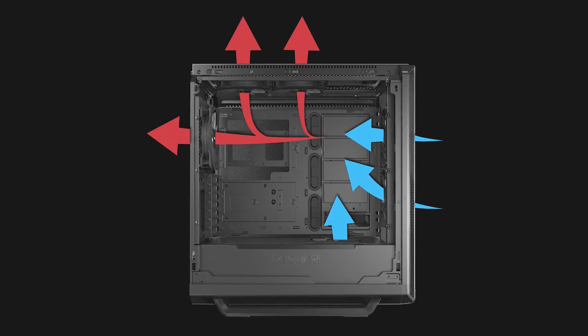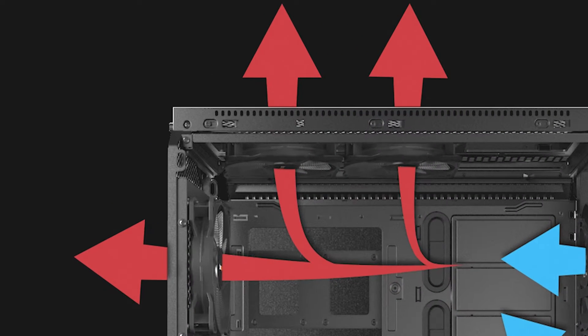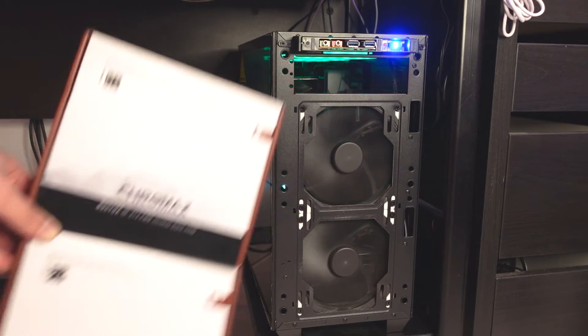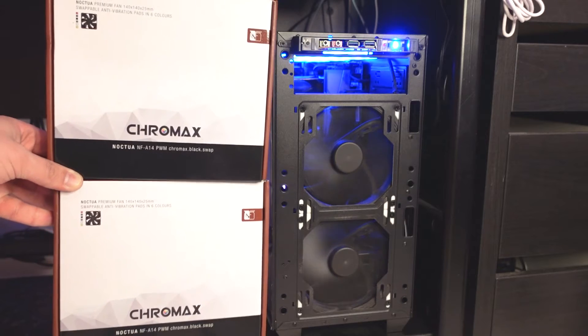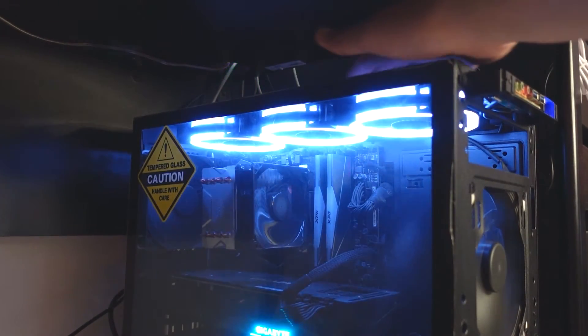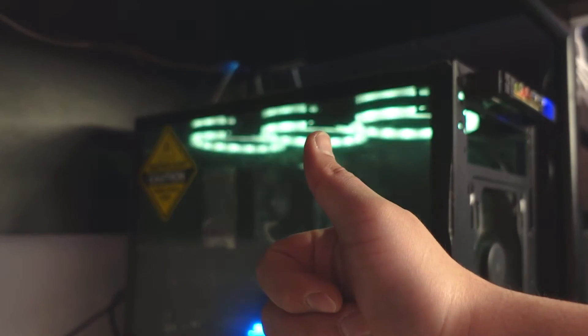Another thing to consider is cooling. The way airflow works in a PC case is intake in the front and exhaust at the back or at the top. I have very little space at the back, so I replaced the stock pre-built fans that came with my case with two big premium Noctua fans to get enough fresh air. I also installed fans at the top to help exhaust as much hot air as possible outside of the case.